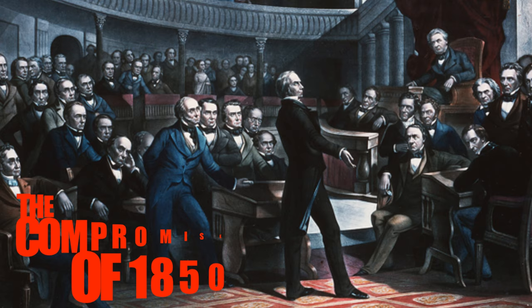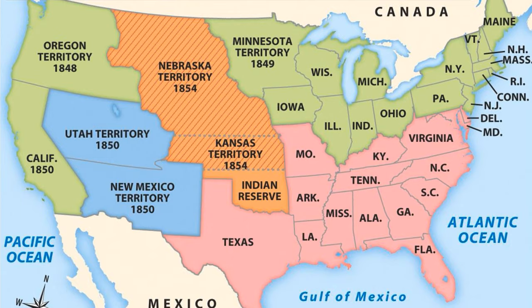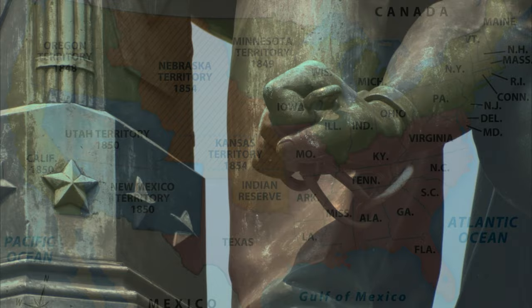Clay's plan, known as the Compromise of 1850, included several provisions to satisfy both sides. First, California would enter the Union as a free state. Second, the people of New Mexico could use popular sovereignty, or a vote of the people, to determine the issue of slavery in their territory without restrictions.